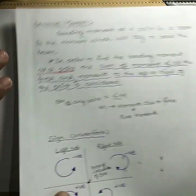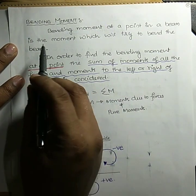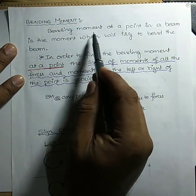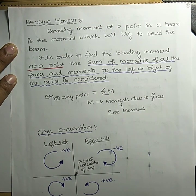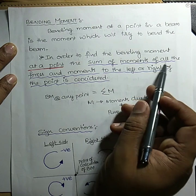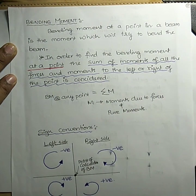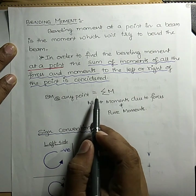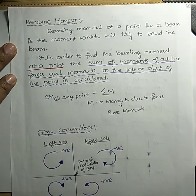Next we have the bending moment. Bending moment at a point in a beam is the moment which will try to bend the beam. To calculate bending moment at any point, we need the sum of moments of all forces and moments to the left side or right side of the point.